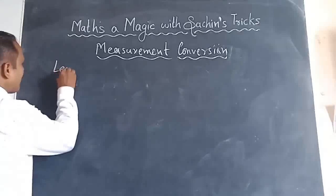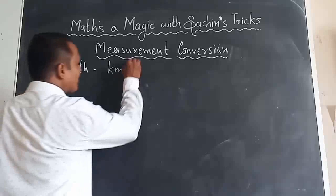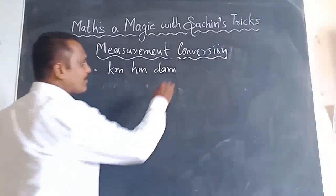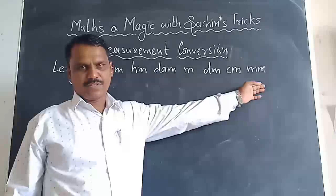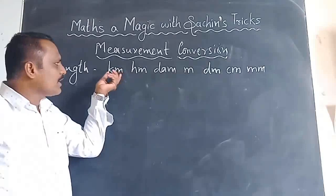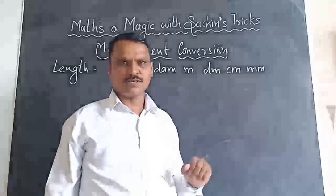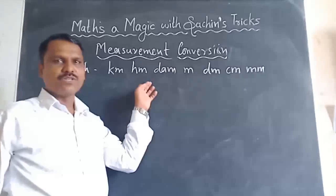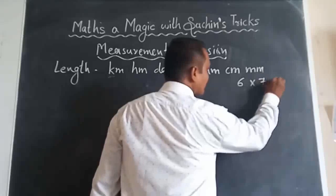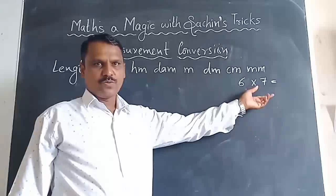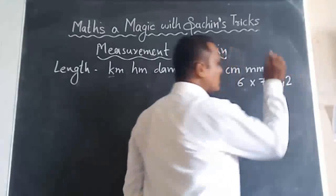First is Length. We have kilometer, hectometer, decameter, meter, decimeter, centimeter, and millimeter — that is seven units. Each unit can be converted into six others, so we have six into seven, which gives 42 conversions for Length.